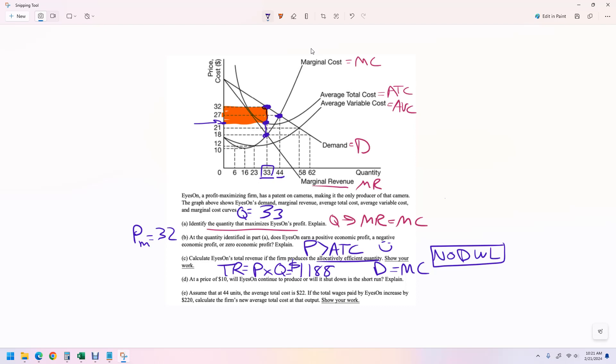At a price of 10, will it produce or shut down in the short run? So before we answer this question, it will always produce if price is greater than average variable cost. This is known as the shutdown rule. And if the price falls below average variable cost, then it should shut down. So at $10, yes, it will shut down because 10 is less than average variable cost, which would be somewhere above there. So the minimum of average variable cost is 12, and 10 is less than 12. So yes, it would shut down.